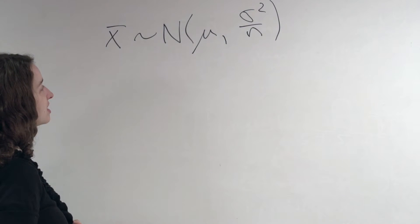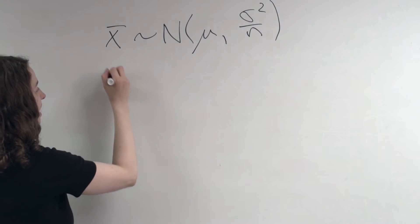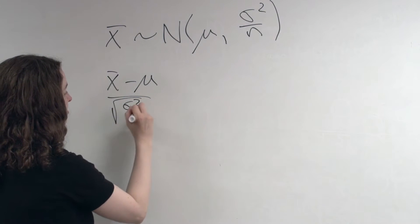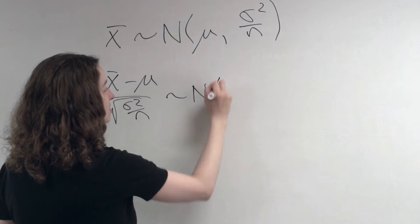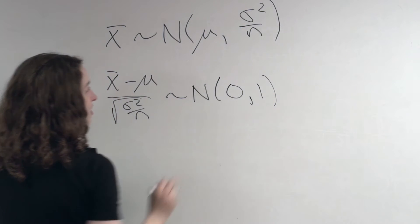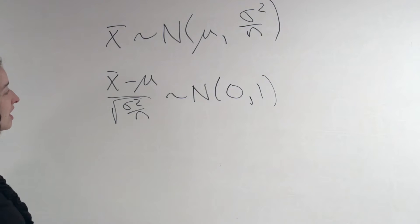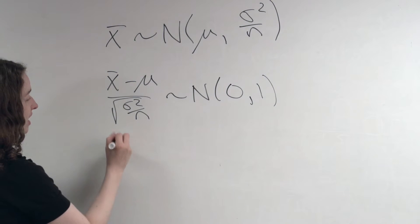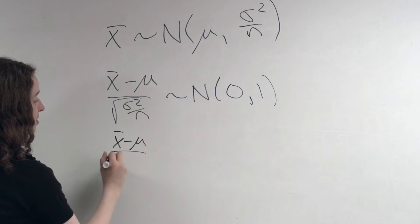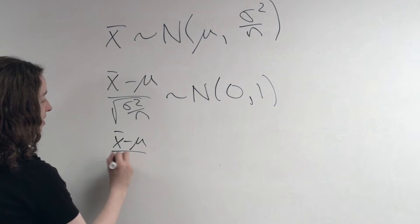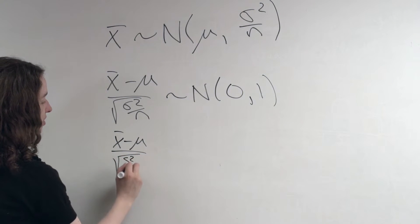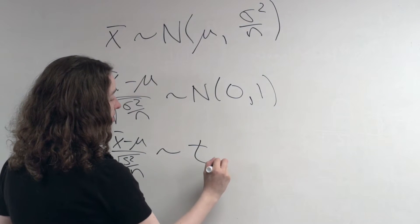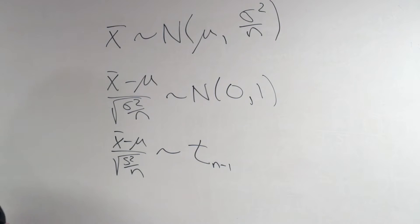Then what did we do with this? Well, we pointed out that you could take x-bar minus mu and divide by the square root of sigma squared over n, and that should follow a normal distribution with mean 0 and variance 1. And we also said that if we substitute an s for the sigma — x-bar minus mu divided by the square root of s squared over n — that should follow a t-distribution with n minus 1 degrees of freedom.